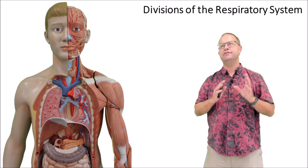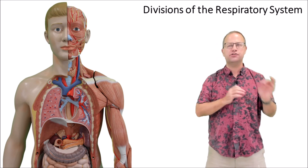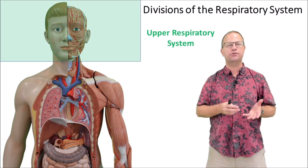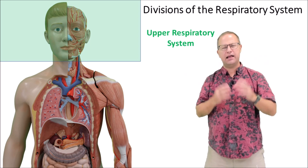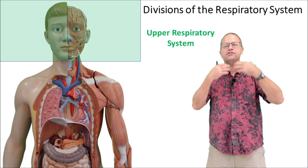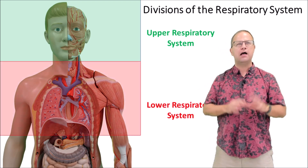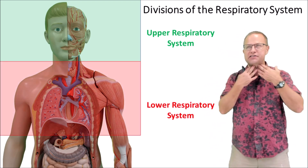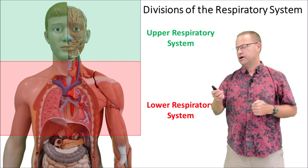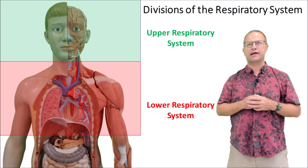Now we're going to talk about divisions of the respiratory system. Depending on which textbook you're using, they might have slightly different structures that fall within the upper and lower respiratory tract. For our textbook, the upper respiratory tract includes all the structures basically in the head that help to conduct the air from the nose to the nasopharynx, oropharynx, and eventually down towards the trachea. The lower respiratory tract starts at the larynx and goes from the larynx to the trachea, primary bronchi, secondary bronchi, bronchioles, and eventually to the alveoli.